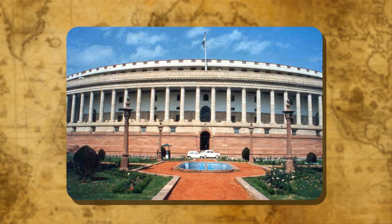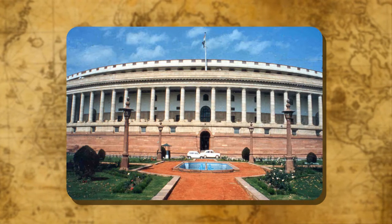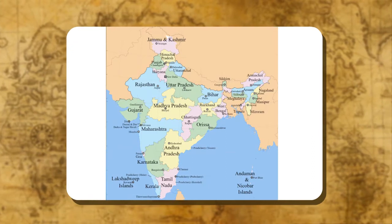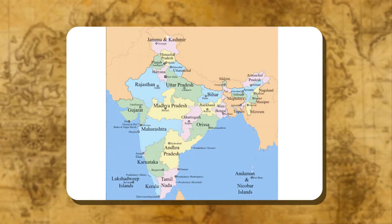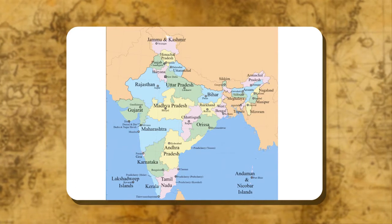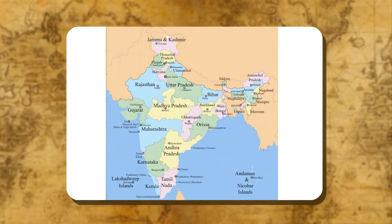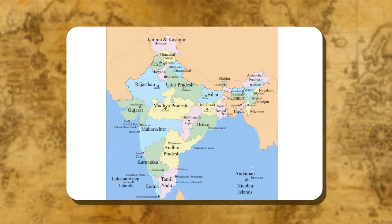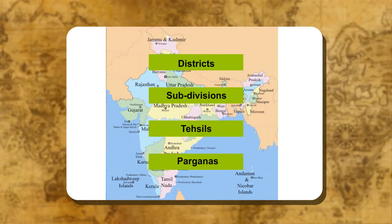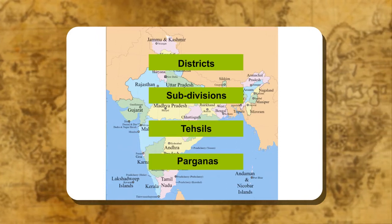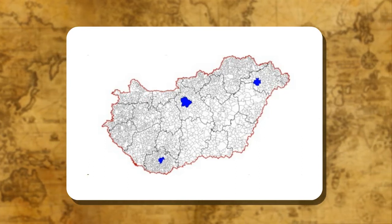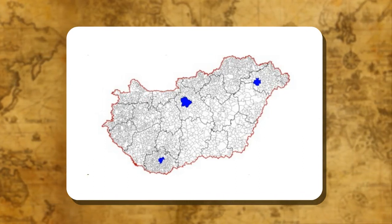Therefore, in order to manage the administration properly and efficiently, our country has been divided into 29 states and 7 union territories. They are further divided into small units known as districts, subdivisions, tehseels and parganas. Among them, the district is the most important unit of administration in our country.